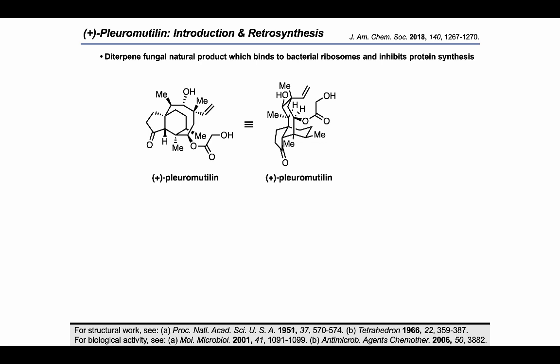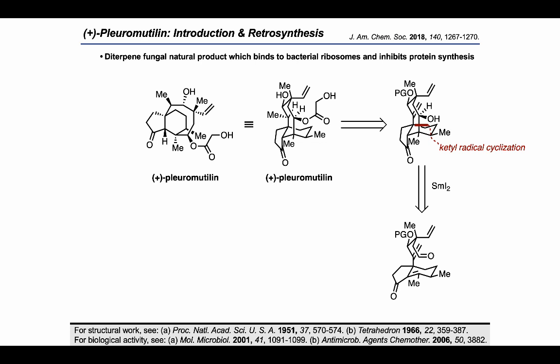They imagined the final target as a more elaborated form of this intermediate, which could be seen as the product of a ketyl radical cyclization, or a radical conjugate addition. That transformation was proposed to occur under the action of samarium diiodide. At this point I want to quickly pause and take a look at another time that samarium diiodide has been employed in radical cyclization in pursuit of plurimutalin.